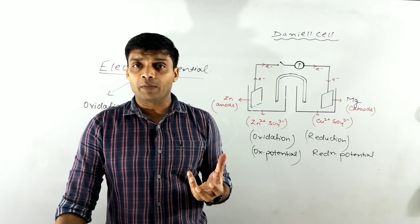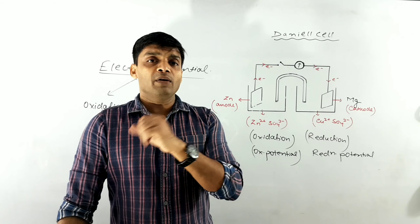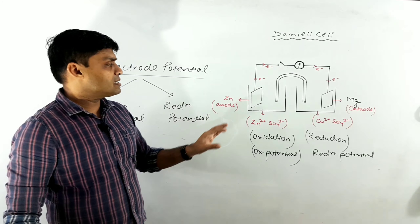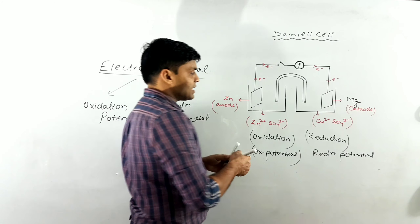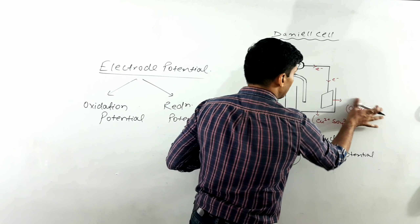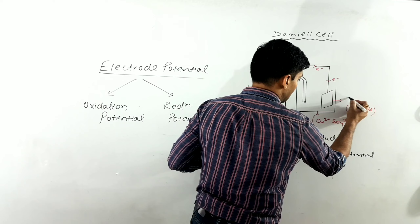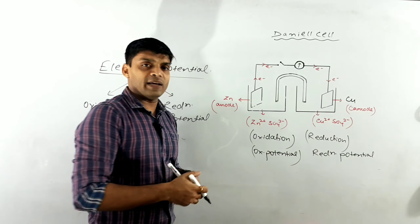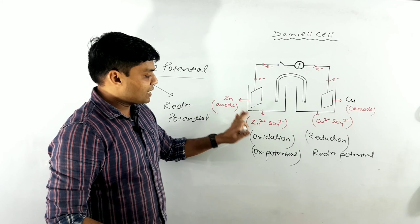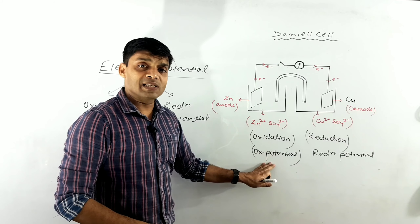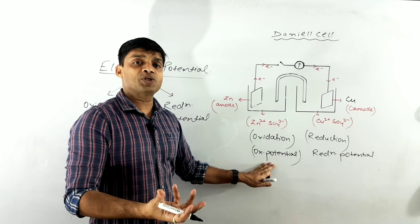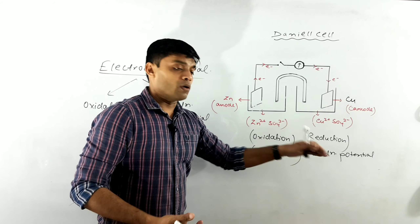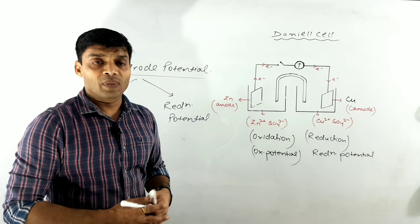Remember, students: in very simple terms, the potential of any metal — its ability to lose or gain electrons — is not an inherent or fixed property. It is a variable property that keeps changing relative to the reactivity of other elements. Whenever an element is connected with a more reactive element, that more reactive one will lose electrons and this one will gain. That's why we call electrode potential a relative property. However, in the Daniel cell specifically, zinc always exhibits oxidation potential and copper always exhibits reduction potential.